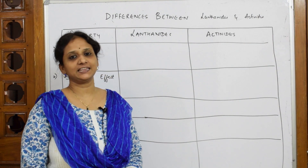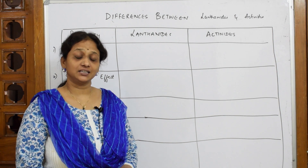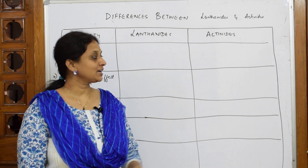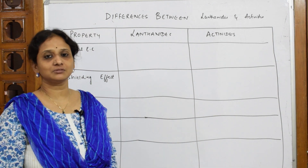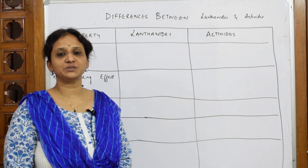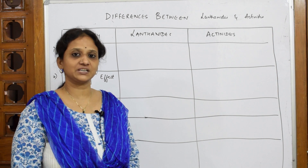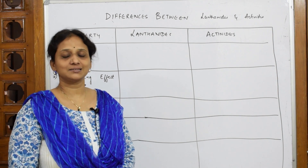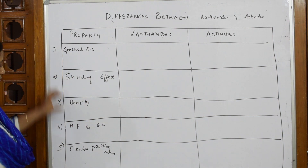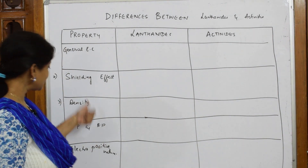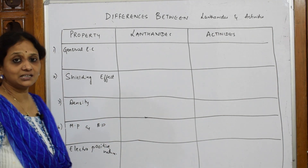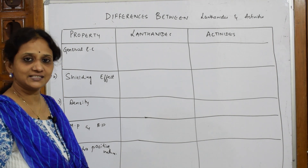Let us come back and start with the differences between Lanthanides and Actinides. This may be asked this year, so we will write examples for everything. I will be listing out almost 13 to 14 differences — at least 7 must be learnt before you go to the exam. I have differentiated Lanthanides and Actinides and written the properties on one side, so the examiner can easily give marks.